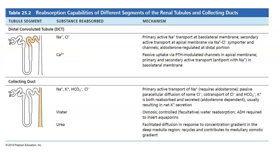Taking a look at the distal convoluted tubule and the collecting duct, the reabsorption that occurs in this area is primarily driven by hormones. Regarding sodium reabsorption: 70% is reabsorbed in the proximal convoluted tubule, additional sodium is reabsorbed actively in the ascending limb, and when you hit the distal convoluted tubule, if aldosterone is present, you'll have additional sodium retention. If aldosterone is not present, you won't get that additional sodium retention. Calcium reabsorption could also occur if parathyroid hormone is present.